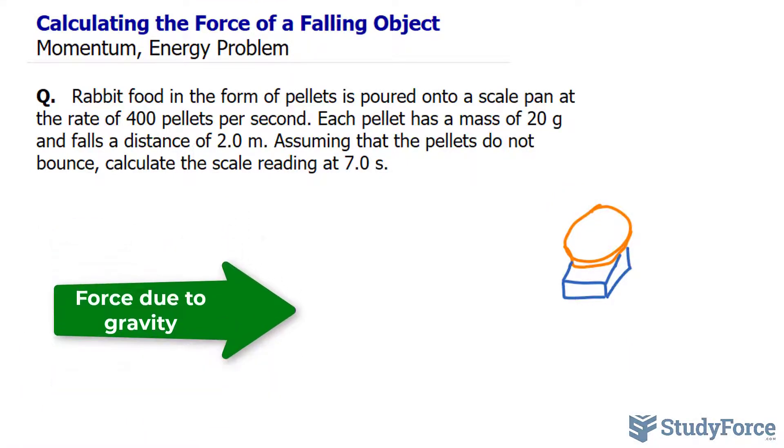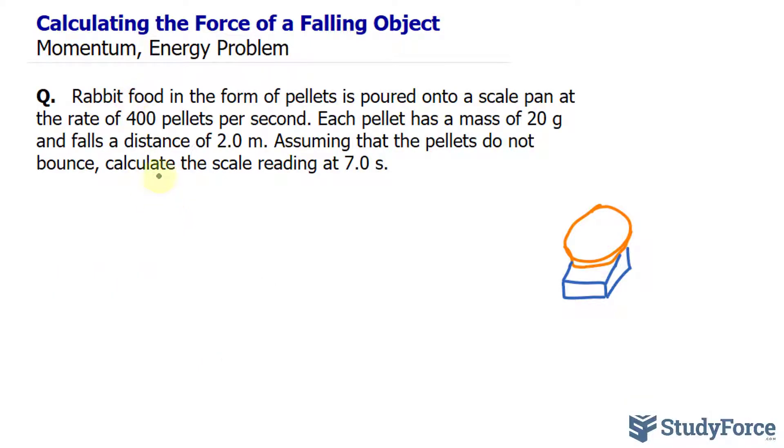To calculate the force due to the accumulation of pellets, all we have to do is read through some of these numbers. We're told that 400 pellets fall per second, so that is a rate, and each of these pellets has a mass of 20 grams. But for the sake of simplicity, I'll convert that into kilograms. So this should be 0.020 kilograms.